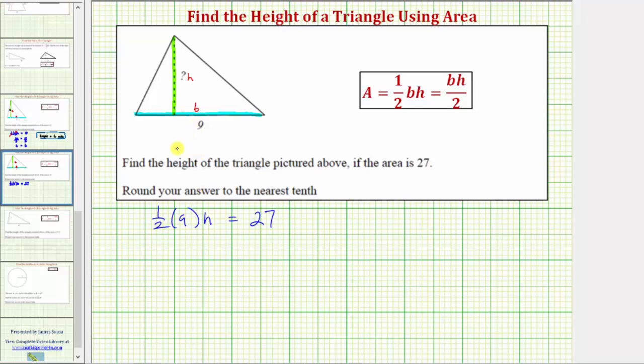If it's helpful, we can write nine as a fraction with denominator of one, and one-half times nine equals nine-halves. So we have nine-halves H equals 27.